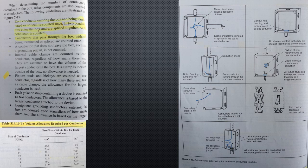Each yoke or strap containing the device is counted as two conductors. The allowance is based on the largest conductor attached to the device.